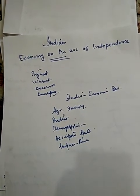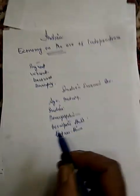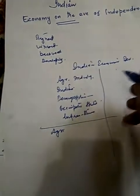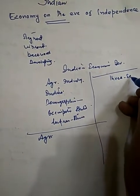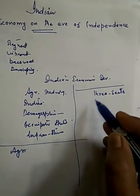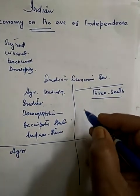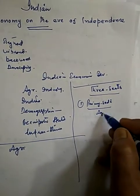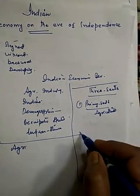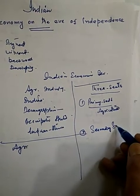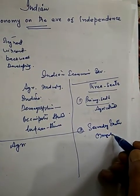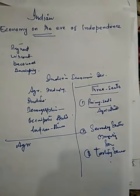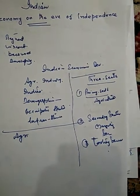First of all, let's go to Indian agriculture. You know that there are 3 sectors in an economy — 3 sectors that contribute to GDP and overall economic prosperity. The first is the primary sector, which is also called the agriculture sector. Then we have the secondary sector, also called the manufacturing sector. Then we have the tertiary sector, also called the services sector. All three sectors contribute to GDP and economic growth.